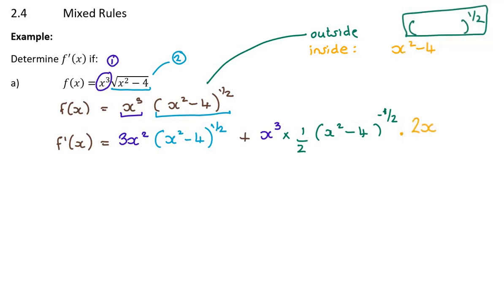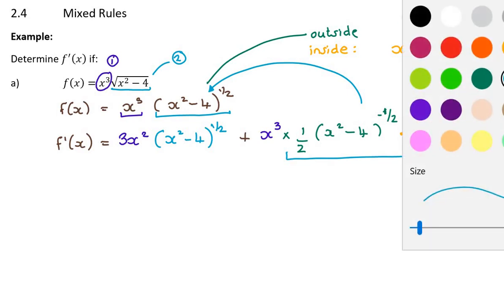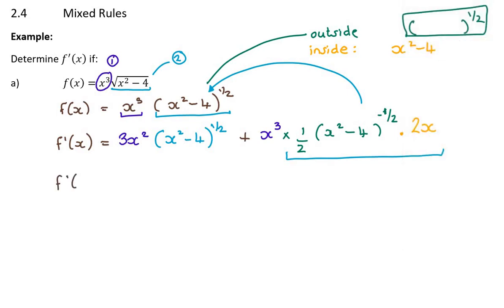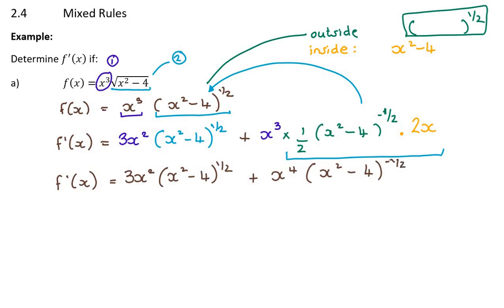That entire expression is the derivative of the second function using the chain rule. Now, can we neaten this up? The twos cancel — though don't cross them out in an exam, so the marker can see you placed them there. After cancelling, we get x to the power of four multiplied by x squared minus four to the minus a half. We don't move it to the bottom because that creates a fraction requiring an LCD. That's the level to which we simplify, unless we need to continue further.